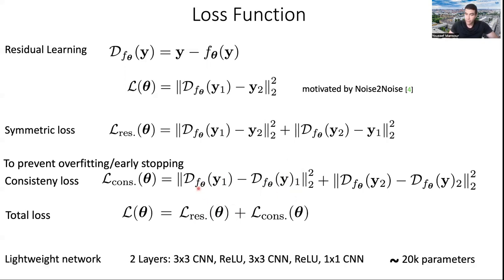This network, F, is just a very small network, consists of only two layers and amounts to around 20,000 parameters. Compare this to the denoising networks that we see nowadays, which contain millions of parameters. And we can see the amount of compute that we save.